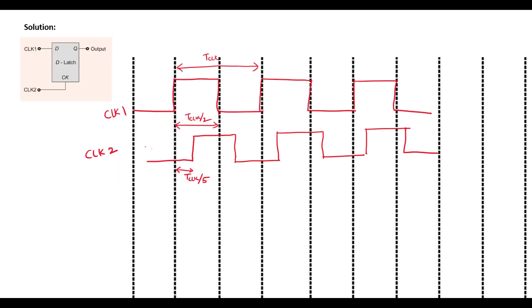So in the problem statement, the clock signal CLK1 has a 50% duty cycle, that means on period is T clock by 2 and the off period is also T clock by 2. And the clock 2 signal is a delayed version of clock 1 and the delay is T clock by 5. And here the clock 1 is applied as an input of this D latch and this clock 2 is applied as an enable signal for this D latch.